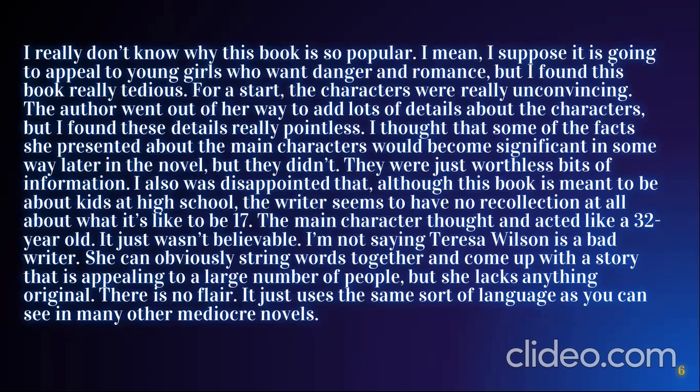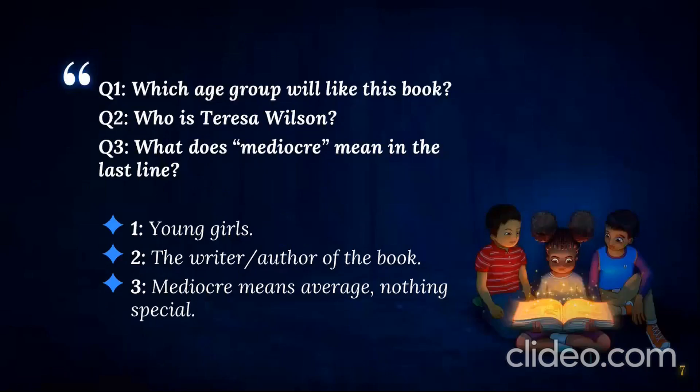We need to read it silently and scan it — meaning we find specific information. For example, the first question: which age group will like this book? The answer is: young girls. That's a specific piece of information — that is the meaning of scanning the text. Second question: who is Teresa Wilson? She is the author or writer mentioned in the passage. Third question: what does 'mediocre' mean in the last line? It means average, or nothing special.